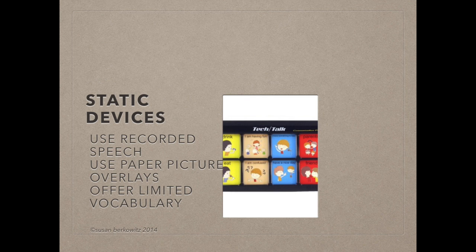Static display devices are those whose picture or text displays stay the same until someone changes the paper overlays to a different set of pictures or words. They use digitized or recorded speech. Because only one page of messages can be accessed at any time, the vocabulary available is very limited. Because they use recorded speech, no word processing is possible, which limits the messages the user can generate.